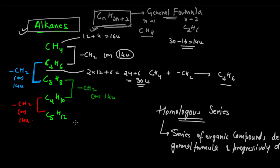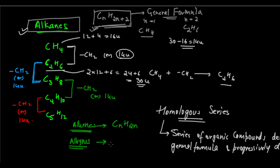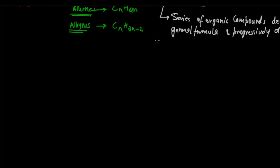You can also have an alkene series, which is also a homologous series, and an alkyne series, which is again a homologous series. Alkenes have a general formula of CnH2n, whereas alkynes have a general formula of CnH2n−2.